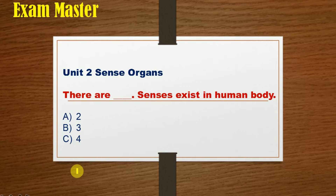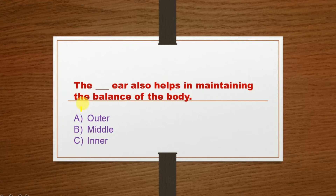So let's start. The very first question: How many senses exist in the human body? Option A: 2, Option B: 3, Option C: 4. The correct option is Option A: 2.